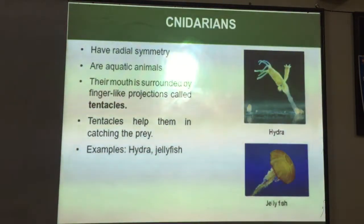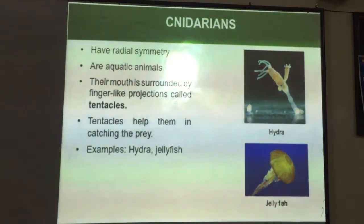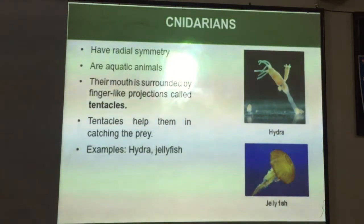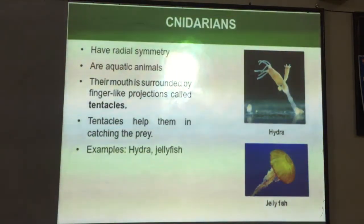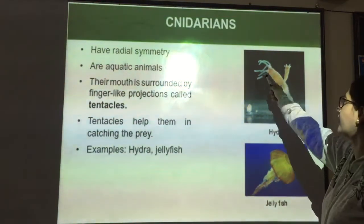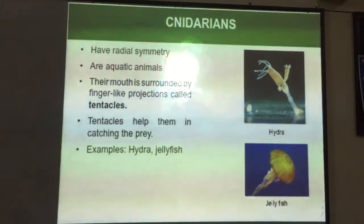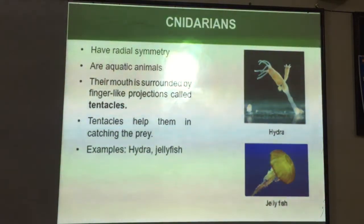Cnidarians have radial symmetry, meaning their body can be divided into two equal parts from any plane. They are mostly aquatic, and their mouth is surrounded by tentacles — finger-like projections that help them in catching prey. Examples are hydra and jellyfish.